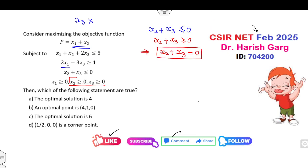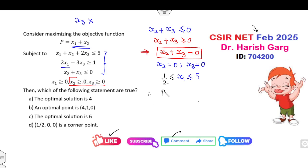Since both x2 and x3 are positive numbers, this happens only when x2 equals 0 and x3 equals 0. Now substituting these values into the given equations: from constraint 1, x1 is less than or equal to 5. From the second constraint, x2 equals 0, so the value of p gives us half less than or equal to x1 less than or equal to 5. So the maximum value and minimum value of p are determined.